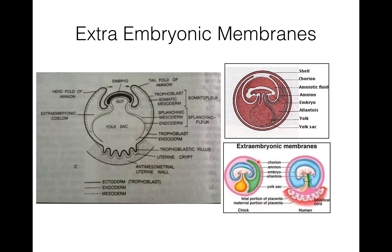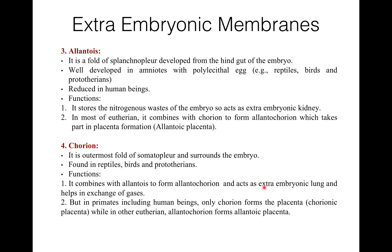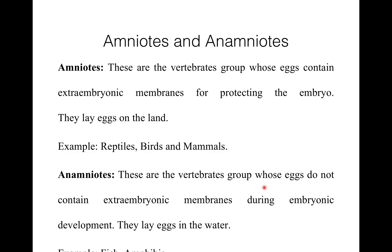Here you can see: this is chorion, here amnion, here allantois, and this is yolk sac. So these are the four extra embryonic membranes. The difference between amniotes and anamniotes: amniotes are the vertebrate group whose eggs contain extra embryonic membranes for protecting the embryo, and amniotes lay eggs on land. Examples are reptiles, birds, and mammals. Anamniotes are the vertebrate group whose eggs do not contain extra embryonic membranes during embryonic development; they lay eggs in water.